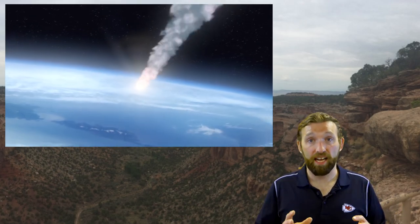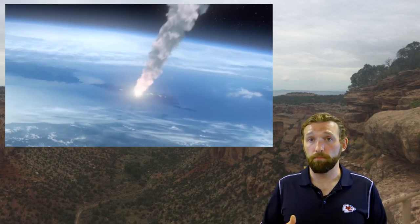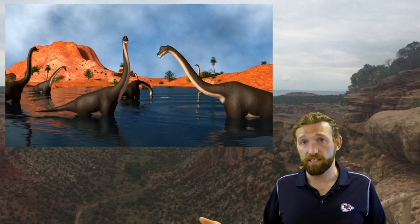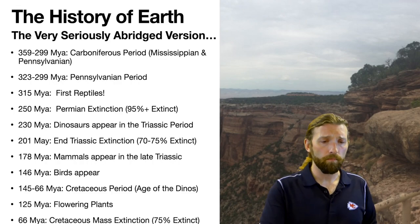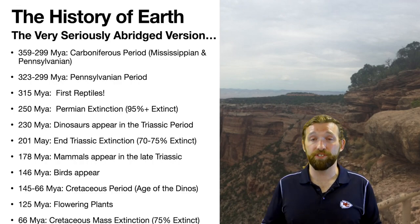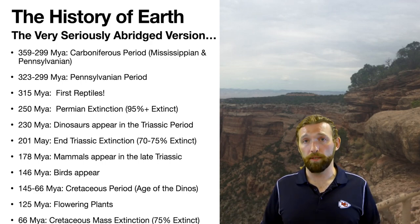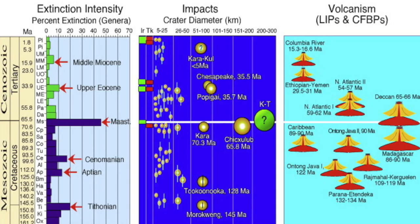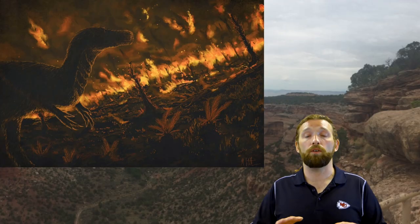Thankfully for us mammals, a giant meteor — miles wide — hit the Yucatan Peninsula in Mexico with such force that it vaporized the limestone rock it hit and started the chain reaction that led to the extinction of the dinosaurs and the rise of mammals. That giant space rock that killed all the dinosaurs is why we're here today. That extinction was the last mass extinction on Earth — 75% of everything died, aided by volcanic eruptions during the same time period.